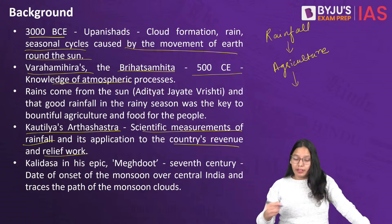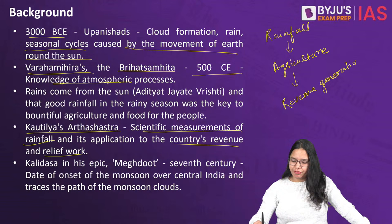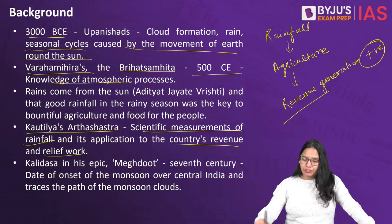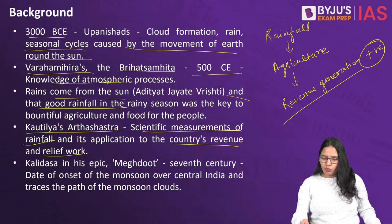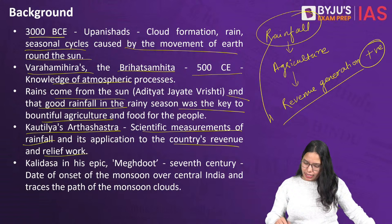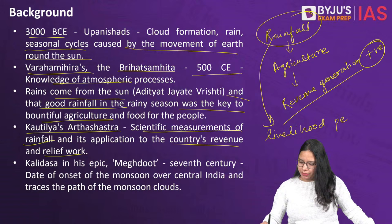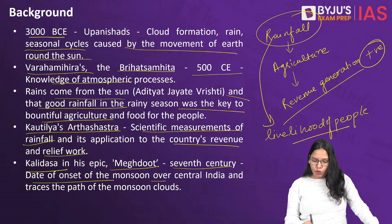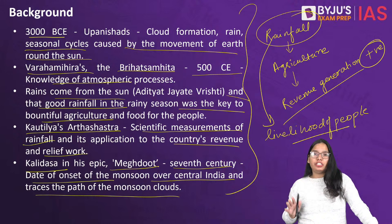Good rainfall leads to positive consequences for agriculture; good agricultural production leads to positive revenue generation. Rain coming from the sun and good rainfall in the rainy season was key to bountiful agriculture and food for the people — rainfall is indirectly very important for the livelihood of people. In fact, Kalidasa in his epic Meghaduta, written in the 7th century, also talks about the date of onset of the monsoon over central India and traces the path of monsoon clouds.